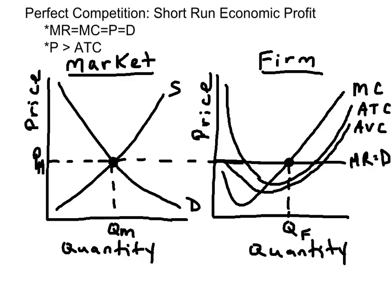A perfectly competitive firm is known as a price taker, because the market determines the price and sends that price over to the firm. That becomes the marginal revenue curve for the firm, which is also the firm's demand curve.